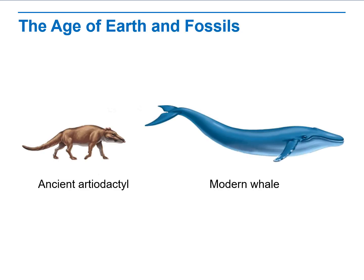Two potential difficulties for Darwin's theory involved the age of Earth and gaps in the fossil record. Although James Hutton and Charles Lyell argued that Earth was old, technology in their day couldn't determine how old. Half a century after Darwin published his theory, physicists discovered radioactivity. Geologists now use radioactivity to establish the age of certain rocks and fossils. The best radioactive dating methods indicate that the Earth is about 4.5 billion years old, providing plenty of time for evolution by natural selection.